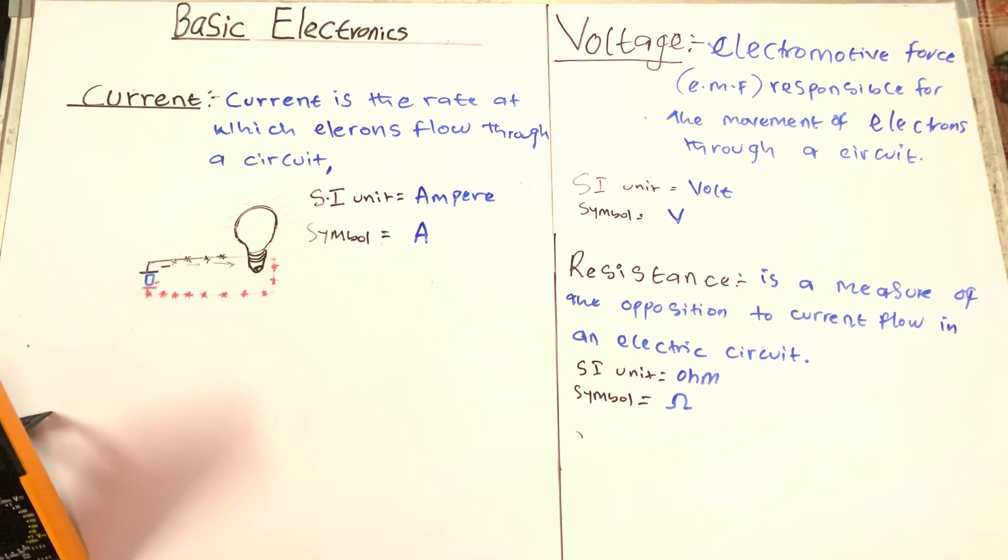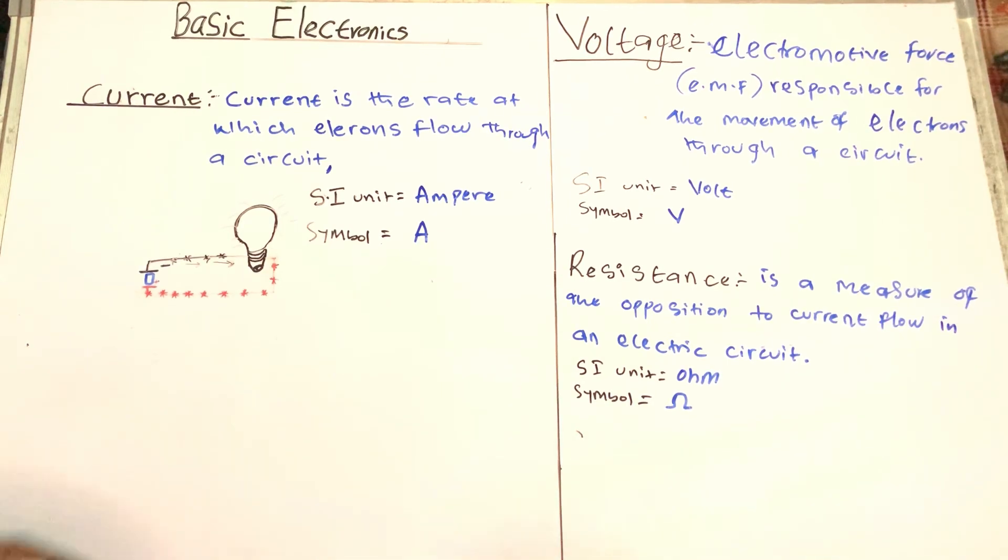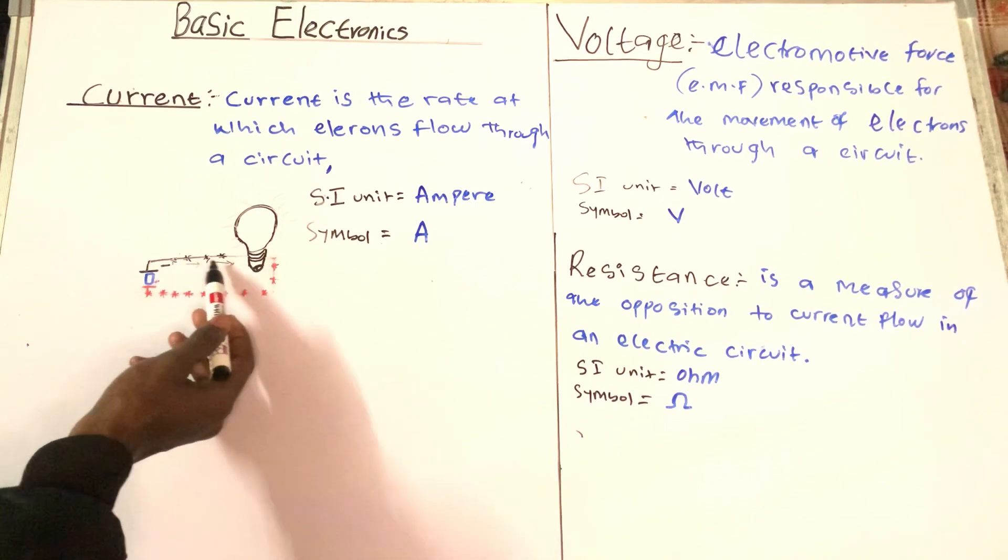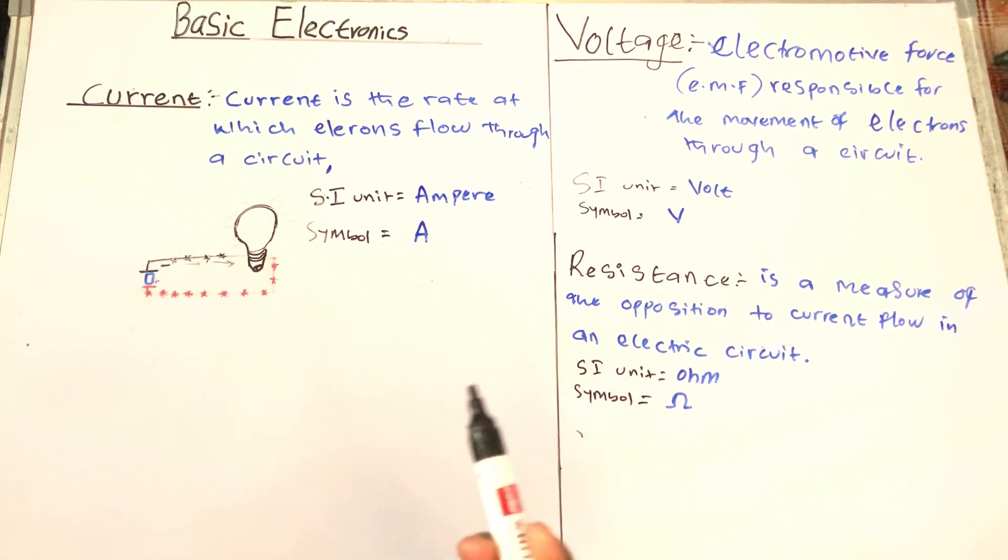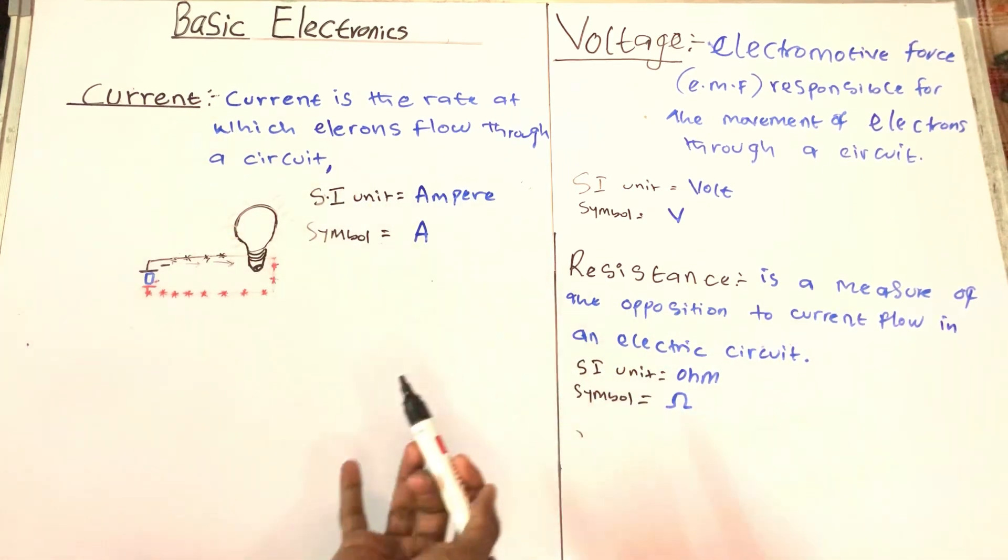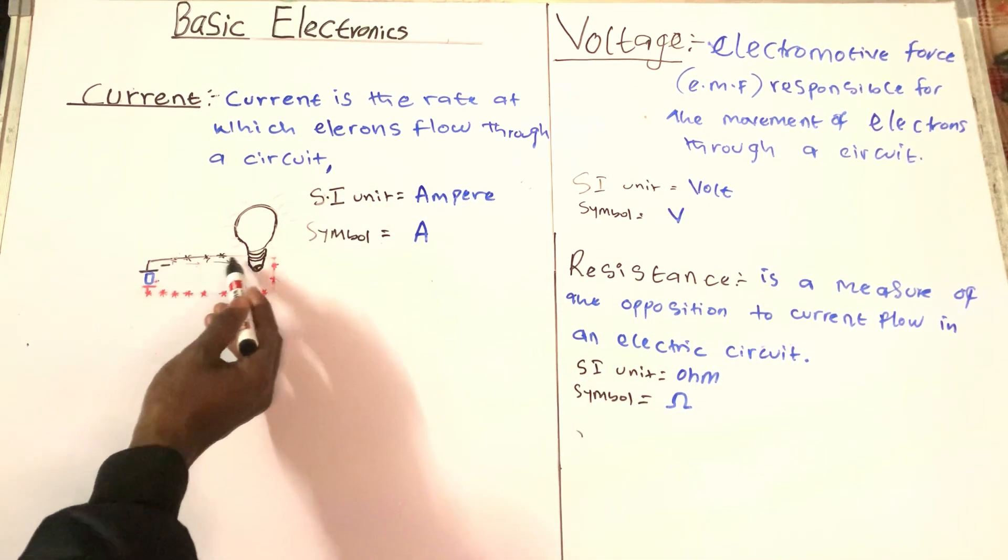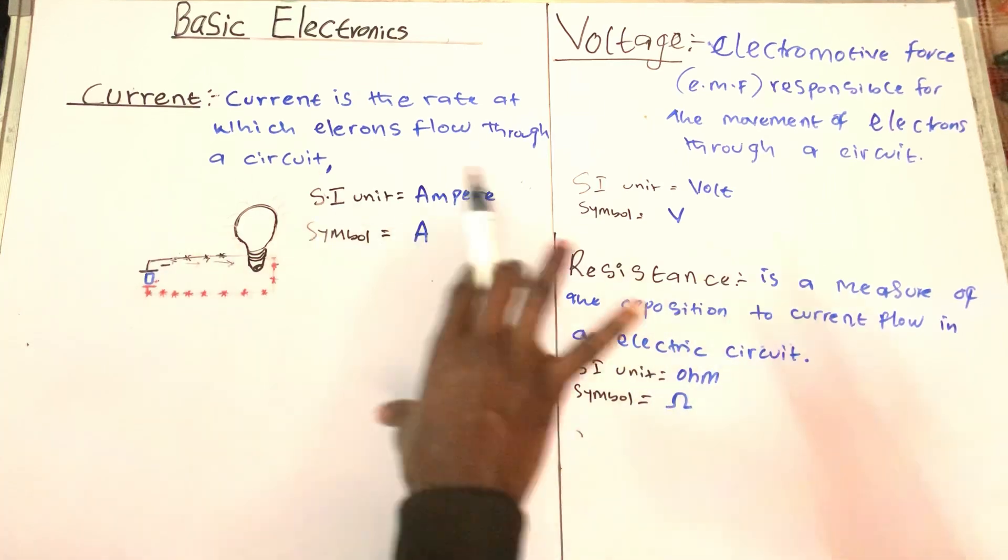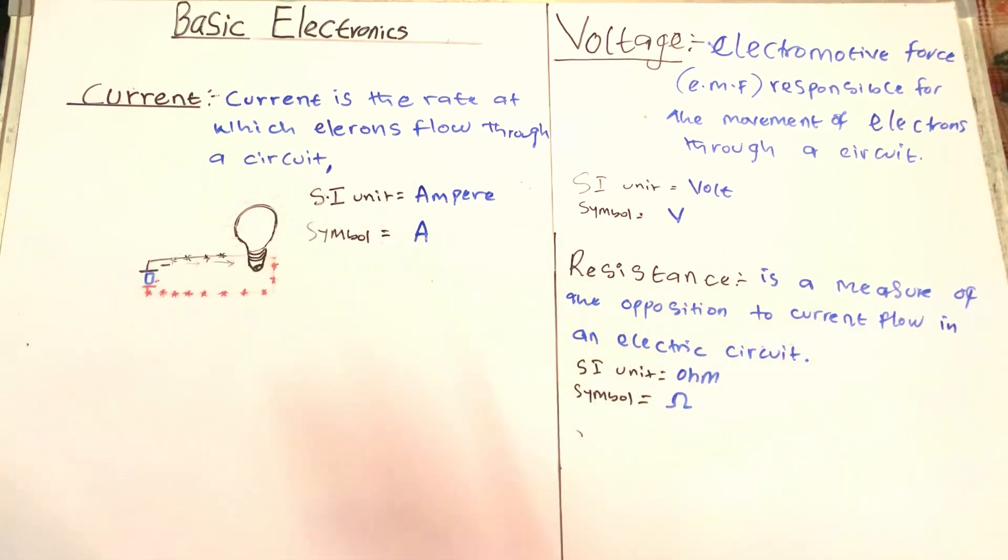Now what is voltage? Voltage is an electromotive force (emf) responsible for the movement of electrons through a circuit. What this basically means is that these are the electrons that move through the circuit.